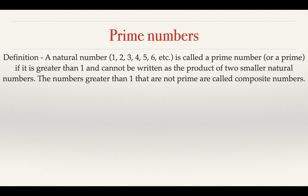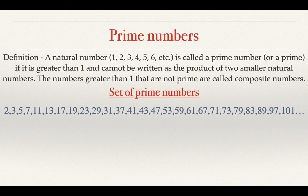Prime numbers. A natural number (1, 2, 3, 4, 5, 6, etc.) is called a prime number, or a prime, if it is greater than 1 and cannot be written as a product of 2 smaller natural numbers. The numbers greater than 1 that are not prime are called composite. One interesting fact: 2 is the smallest prime and the even prime, and it is unique - there is only one even prime and that is 2.